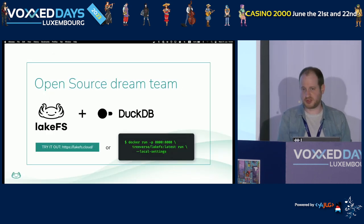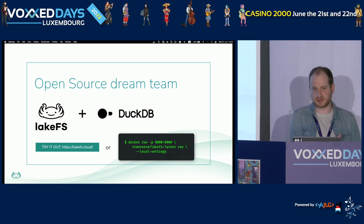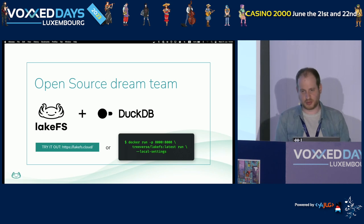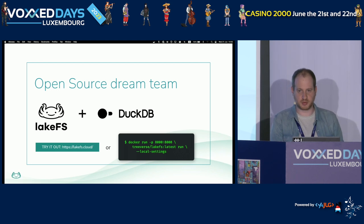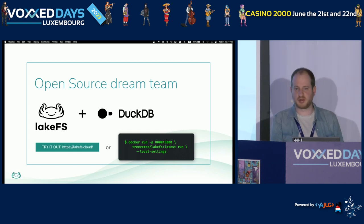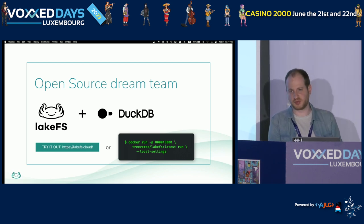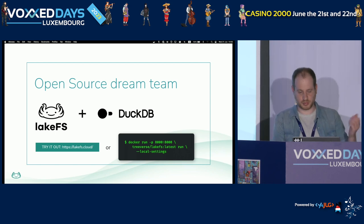Both of these projects are open source. You can use LakeFS either through LakeFS Cloud, which is a managed service, or just spin it up yourself — clone the repo or run the Docker command and get it running on your machine. It doesn't require any infrastructure. DuckDB comes embedded into the UI. So if you already have existing information on your object store — Parquet, CSVs, JSON files — you can click a button, import them into LakeFS (it doesn't actually copy the data, it just points to it), and then immediately query using DuckDB or any other tool on top of LakeFS.